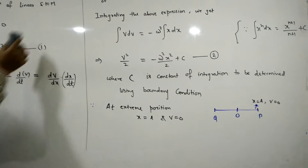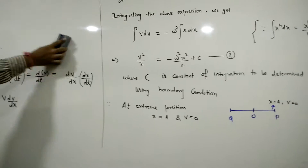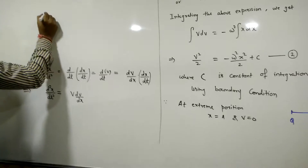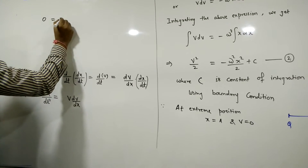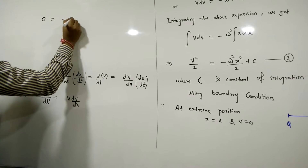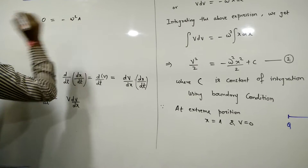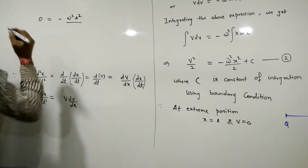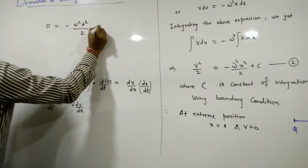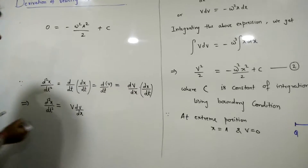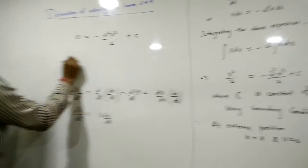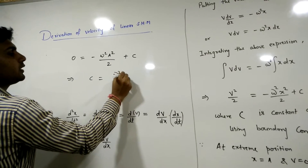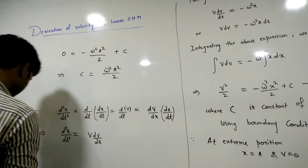Putting x = a and v = 0 into the equation, we get 0 = -ω²a²/2 + C. Therefore, C = ω²a²/2.